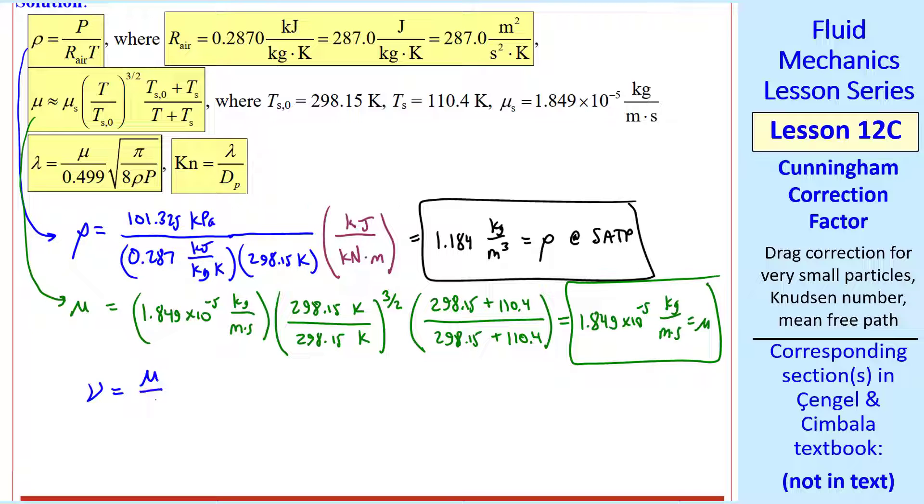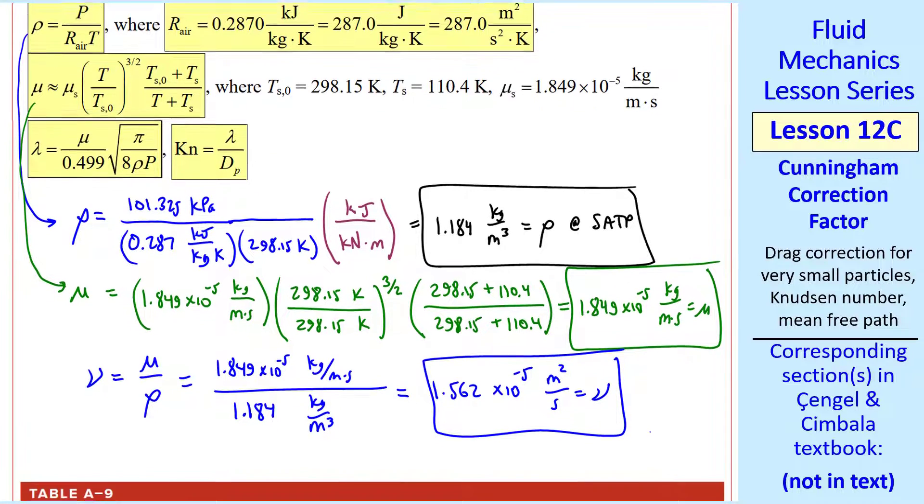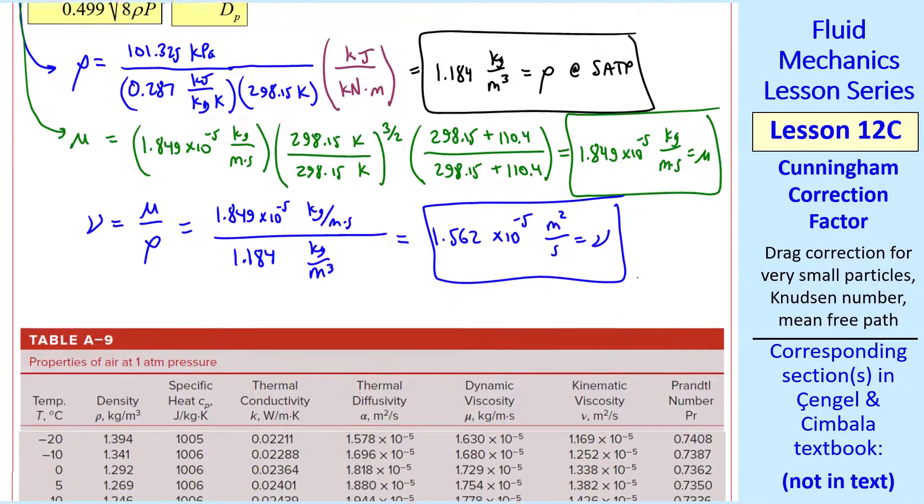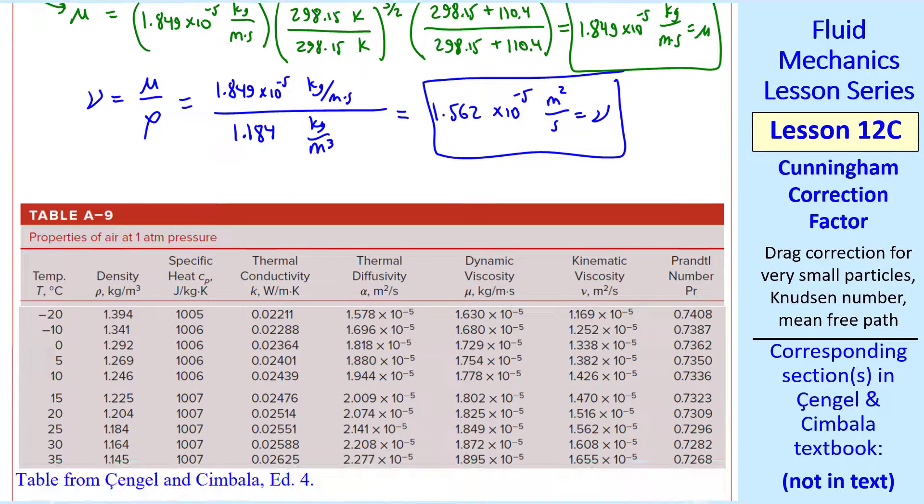Recall the kinematic viscosity is mu over rho, which gives us 1.562 times 10 to the minus 5th meter squared per second. Here I compare with the values given in table A9, the appendix in our textbook.